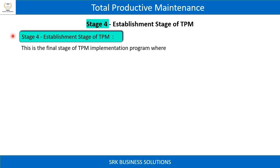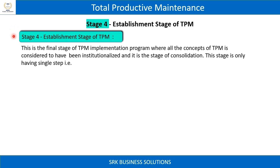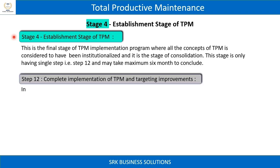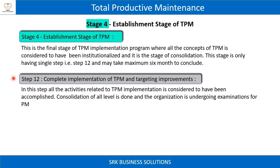Stage 4 is the establishment stage of TPM. This is the final stage of the TPM implementation program, where all concepts of TPM are considered to have been institutionalized — it is the stage of consolidation. This stage has only a single step, step 12, and may take a maximum of six months to conclude.